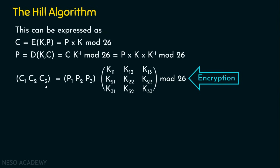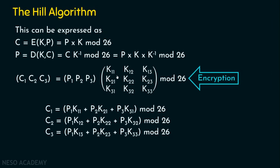The output [C1, C2, C3] is a 1×3 matrix, because it is the product of the plaintext 1×3 matrix multiplied by the 3×3 key matrix. C1 is obtained by multiplying the plaintext row with the first column of the key; C2 with the second column; and C3 with the third column. Always apply mod 26 in all cases.